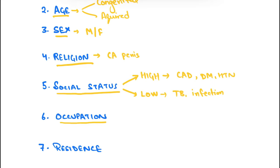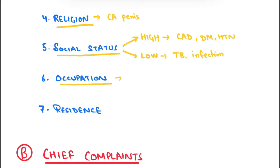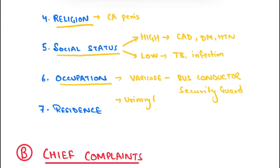Coming to the occupation part, you have to ask about the patient's occupation. For example, varicose veins are more common in bus conductors and security guards because prolonged standing leads to varicose veins. Another example: urinary bladder carcinoma is more common in workers of aniline dye factories.